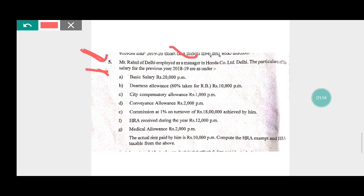The basic salary is Rs. 20,000 per month and dearness allowances, in the bracket they have given that 60% enters into retirement benefit, Rs. 10,000 per month. City compensatory allowances Rs. 1,000 per month. Conveyance allowances Rs. 20,000 per month.